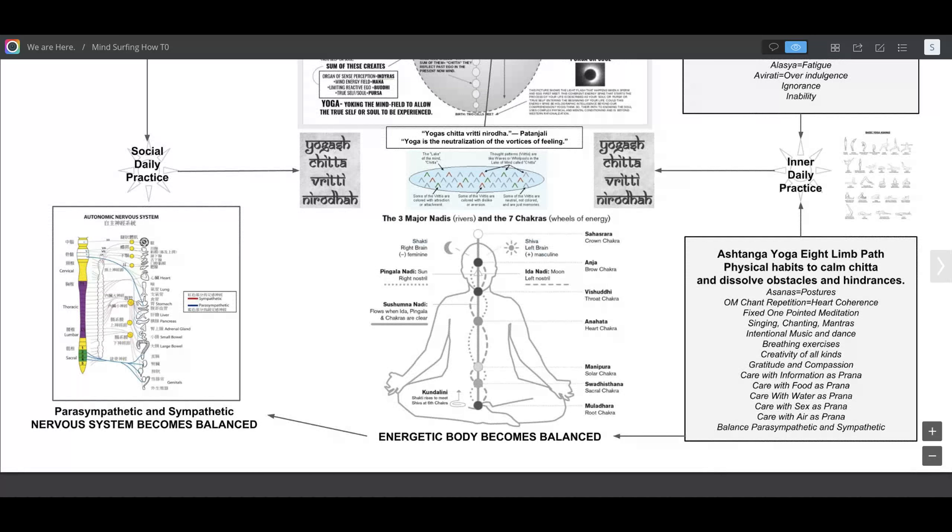The om chant is a vibratory state that has been shown to affect the coherence of the heartbeat and the coherence of thoughts in the mind. By coherence, it means regularity, or if you can think of something as trying to seek a level point of vibration, and that's what it does.